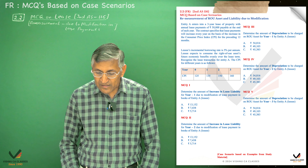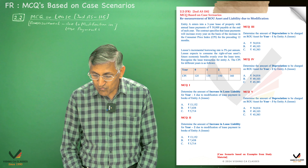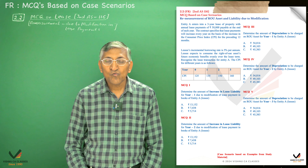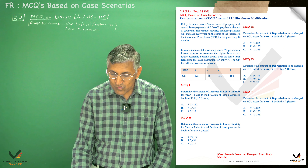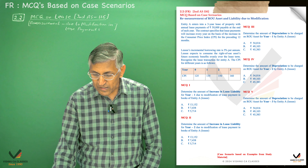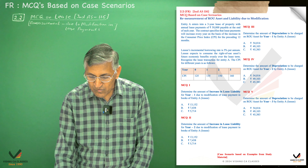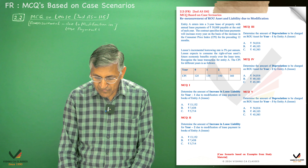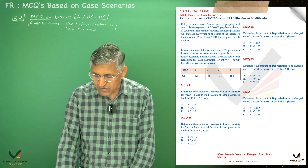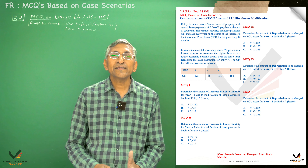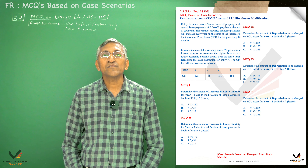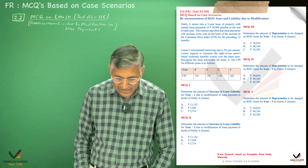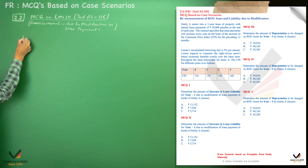In the MCQs, we are looking for: the recurring amount of increase in lease liability for year 1 and year 2 due to modification of lease rent in the books of entity A as lessee; and the amount of depreciation to be charged on the ROU asset for year 1, year 2, and year 3 respectively.